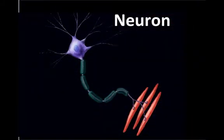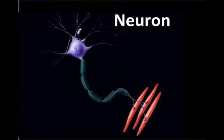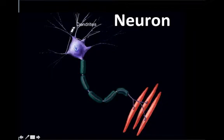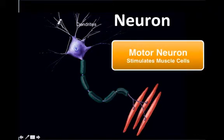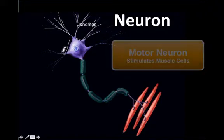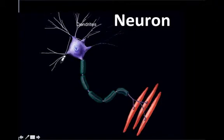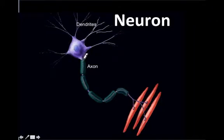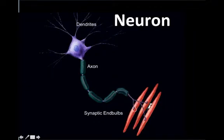How is this all controlled? To understand that, we have to look at the neuron — part of the nervous system. Nerves control muscles. The neuron has a cell body with a nucleus, and dendrites that receive information from other neurons. This motor neuron receives its message from other neurons in the central nervous system, which signal the dendrites to send a message to the muscle fibers. The message is conducted along the axon all the way down to the synaptic end bulbs, which is where the neuron actually communicates with the muscle fiber.